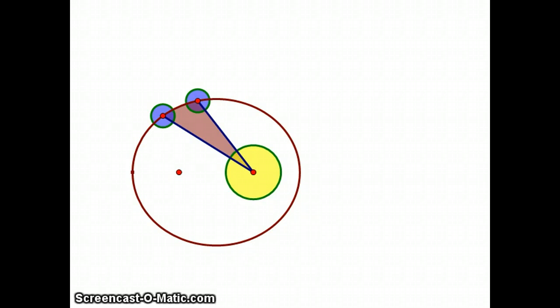I'll animate this. These are two positions of the planet, the same distance apart. Over here, this region has the same area as this region here. And that's true for any of them. That's Kepler's equal areas in equal times law.